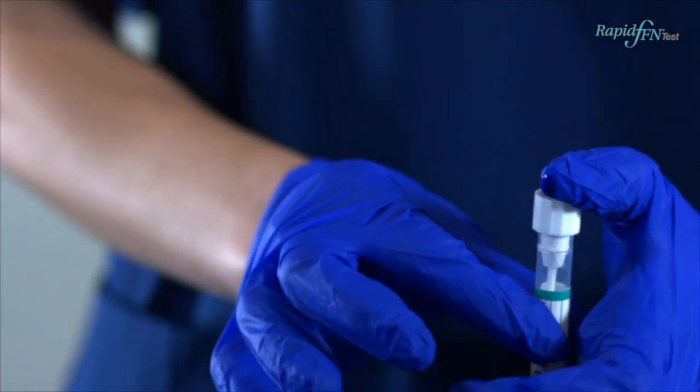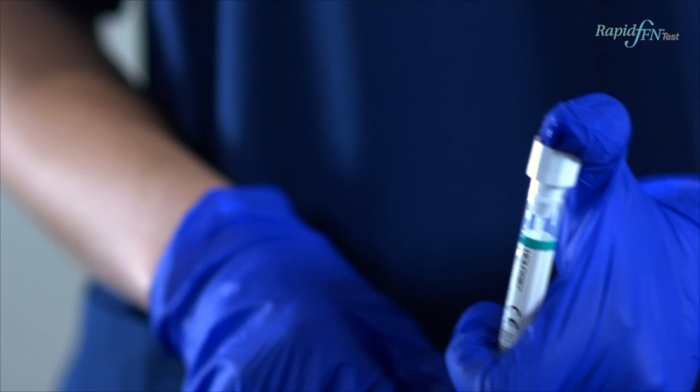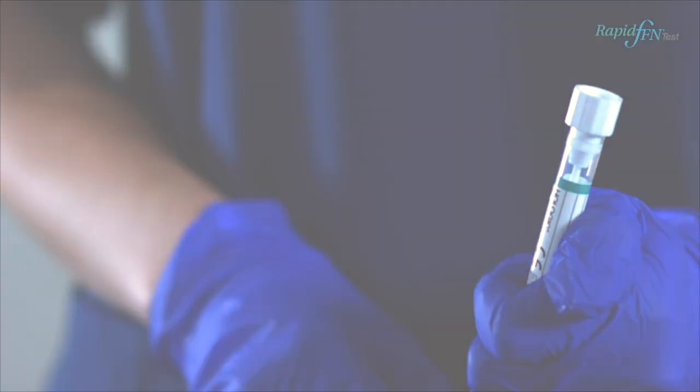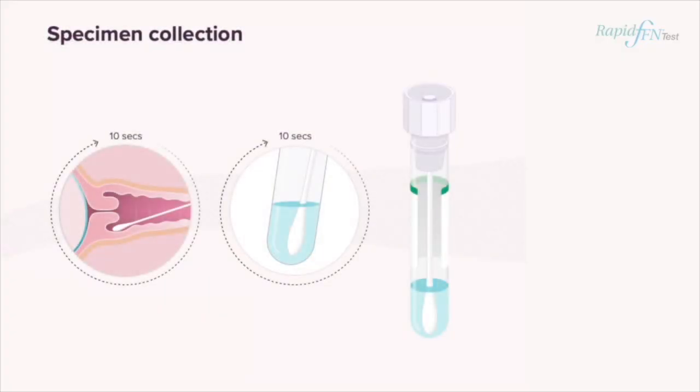To replace the cap of the test tube, align the shaft with the hole inside the tube cap and push down tightly over the shaft, sealing the tube. Ensure the shaft is correctly aligned to avoid leakage.